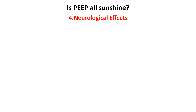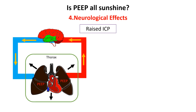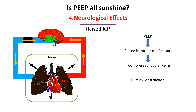Just like increased intrathoracic pressure reduces venous return to the heart, PEEP can also affect venous outflow from the brain, leading to increased intracranial pressure. When PEEP elevates intrathoracic pressure, it compresses the jugular veins, which are responsible for draining blood from the brain, impairing venous outflow and causing blood to accumulate in the cranial circulation. In patients with traumatic brain injury or stroke, this reduced venous drainage can worsen cerebral edema and increase ICP.